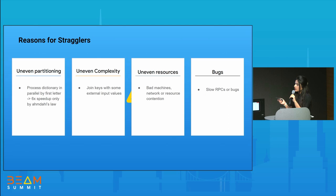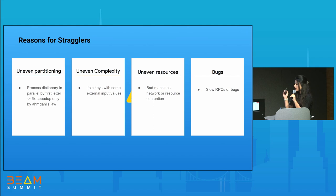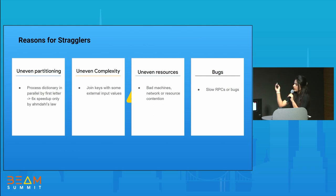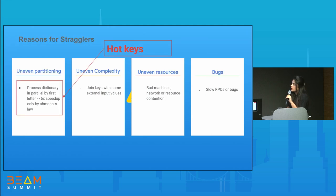It's not always that the partitioning scheme is the problem — it can be uneven complexity, where some per-record operations take much more time. I've seen cases where customers were loading jar files on every record operation, and that became a bottleneck. Sometimes it's uneven resources or bad machines — you're doing RPC calls to external machines, and some hit slow instances while others hit fast ones, or it could be a hardware issue. The solution we're focusing on is uneven partitioning where there are more values associated with a certain key.